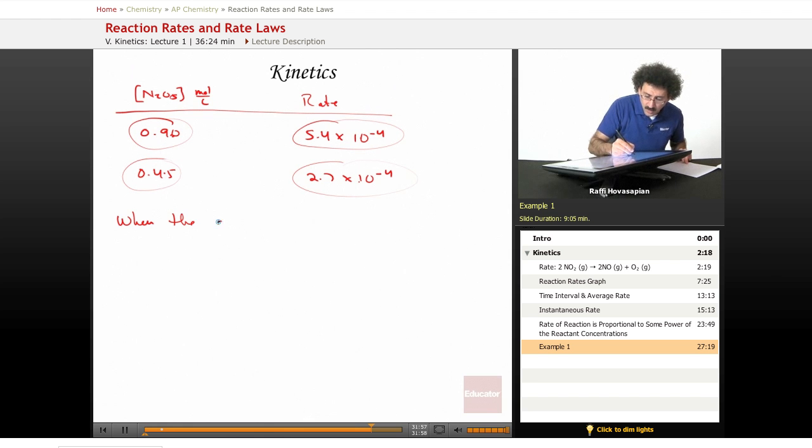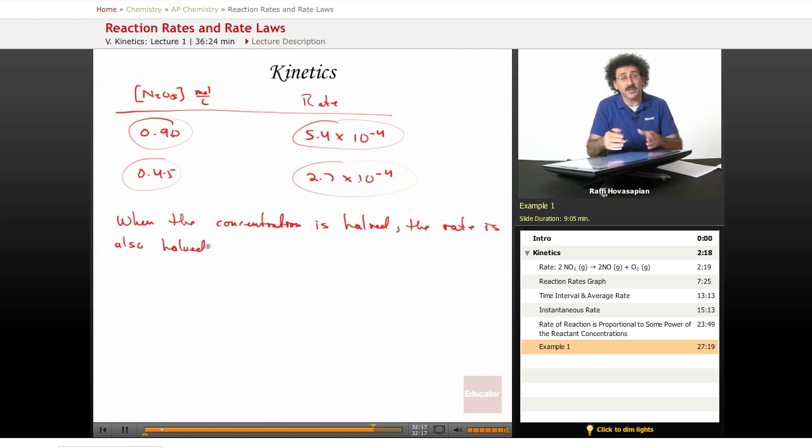when the concentration is halved, the rate is also halved, it won't always happen like this. It just happens to be this particular data that we did. And we arranged it so we can check the rate at concentration that is easily comparable. So 0.9, 0.45, this is twice that. This is half of that. So as it turns out, when I halve the concentration, the reaction rate is also cut in half. That's a linear relationship. That's the whole idea of it.